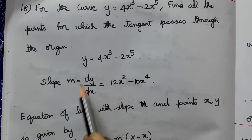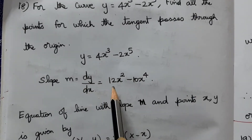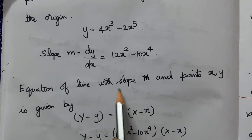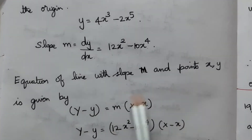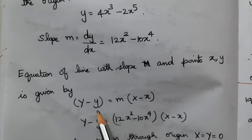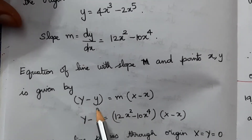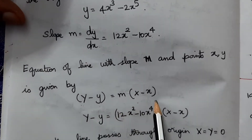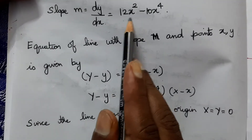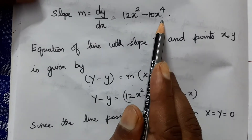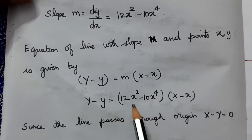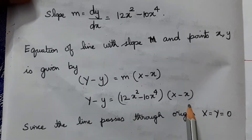For the curve y = 4x³ - 2x⁵, dy/dx = 12x² - 10x⁴. The equation of the tangent at point (x₁, y₁) is y - y₁ = (12x² - 10x⁴)(x - x₁). Since the tangent passes through the origin (0, 0), substituting x = 0 and y = 0 gives -y₁ = (12x² - 10x⁴)(-x₁).